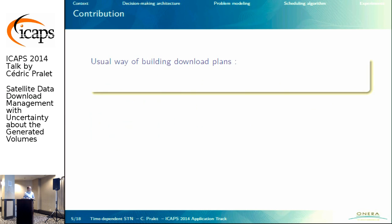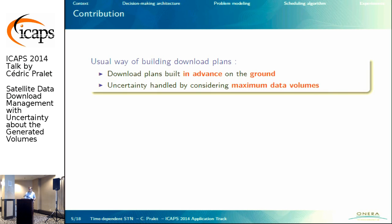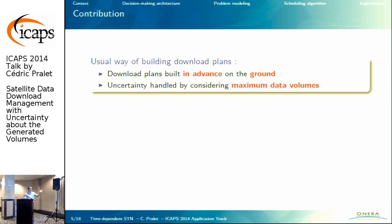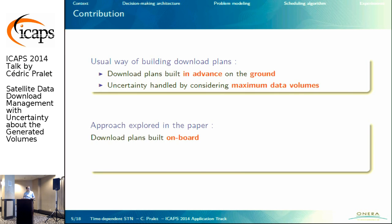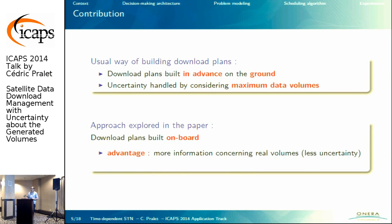The contribution of the paper: the usual way of building download plans is to build them completely in advance on the ground, upload them to the satellite, and have the satellite execute these plans with no on-board intelligence — at least for European satellites. Uncertainty is handled by considering pessimistic assumptions on volumes, assuming maximum data volumes at execution time. In the paper, we explore an approach where we build download plans on board. The advantage is that on board we have more information about real data volumes and can directly observe them, meaning less uncertainty. The challenge is that on board we have much less computing resources in terms of CPU and RAM.